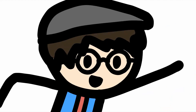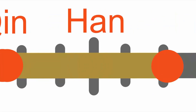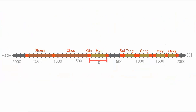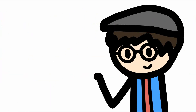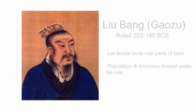Great segue into the next dynasty! The Han Dynasty came next, starting right after the Qin Dynasty ended. It was one of the longest lasting dynasties in China, lasting from 206 BCE to 220 CE. During this time, the Han Dynasty had a lot of notable achievements, such as the invention of paper. Their founder was Liu Bang, who was later known as Yao Zhu. Yao Zhu would let the lords rule part of his land, and the population and economy thrived under his rule.